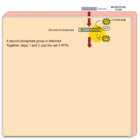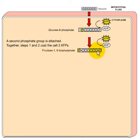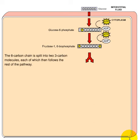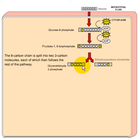Next, another phosphate is added to carbon number 1. So now we have one phosphate attached to carbon 6 and one phosphate attached to carbon 1, and we get fructose-1,6-bisphosphate.